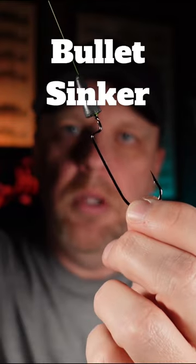Alright, let's rig a Texas rig. I like to use a 3-0 worm hook, some 10 to 15 pound test line, and a bullet sinker.